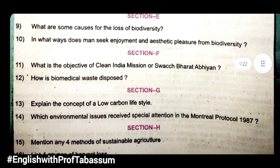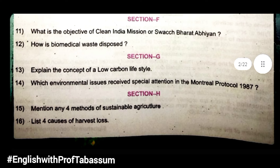Section E: What are some causes for the loss of biodiversity? In what ways does man seek enjoyment and aesthetic pleasure from biodiversity? Section F: What is the objective of Clean India Mission or Swachh Bharat Abhiyan? How is biomedical waste disposed? Section G: Explain the concept of a low-carbon lifestyle. Which environmental issues received special attention in the Montreal Protocol 1987? Section H: Mention any 4 methods of sustainable agriculture. List 4 causes of harvest loss.